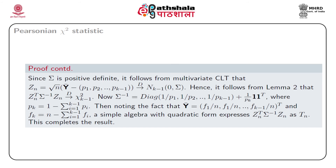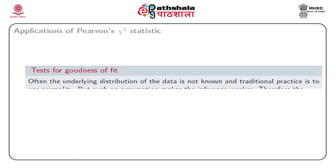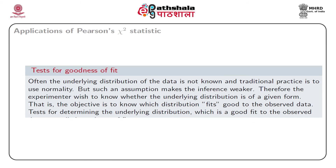What are the applications of Pearson's chi-square statistic? We have defined Pearson's chi-square statistic and obtained its large sample distribution. Let us enumerate its applications in statistics. The first application is known as tests for goodness of fit. Often the underlying distribution of the data is not known and the traditional practice is to assume normality. But such an assumption makes the inference weaker. Therefore, the experimenter wishes to know whether the underlying distribution is of a given form — that is, which distribution fits the observed data well.